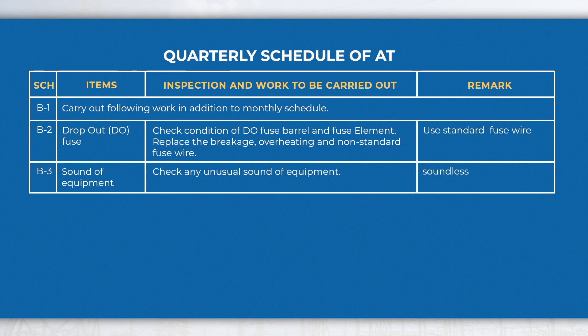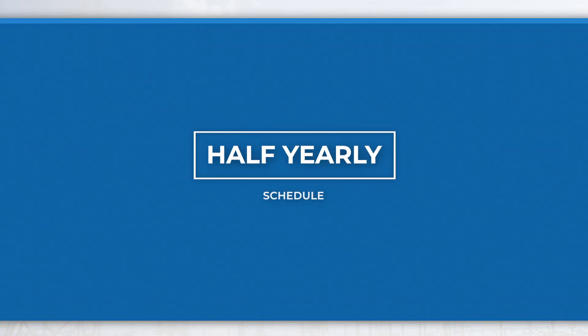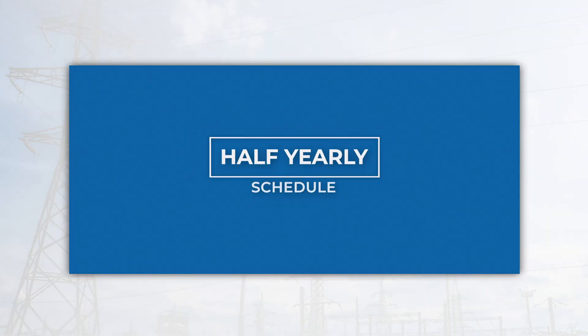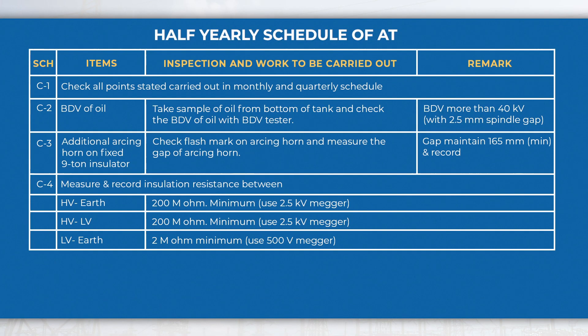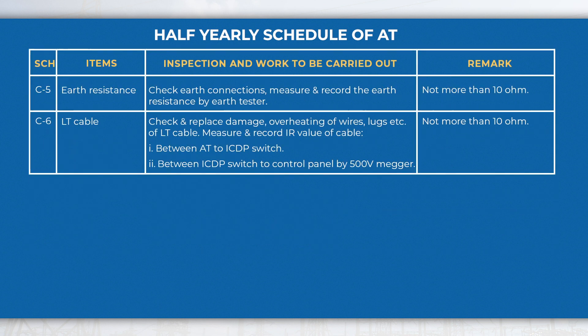In the half-yearly schedule, perform activities like measuring the insulation resistance value and checking the BDV of oil, etc., in addition to monthly and quarterly schedule activities.